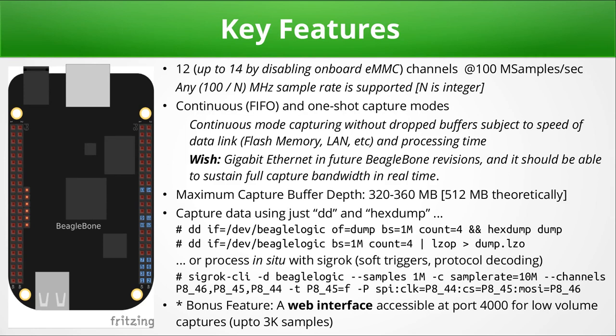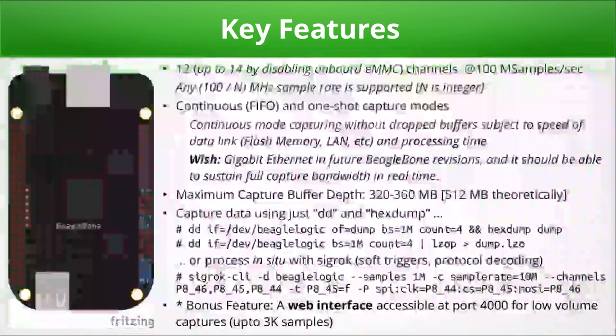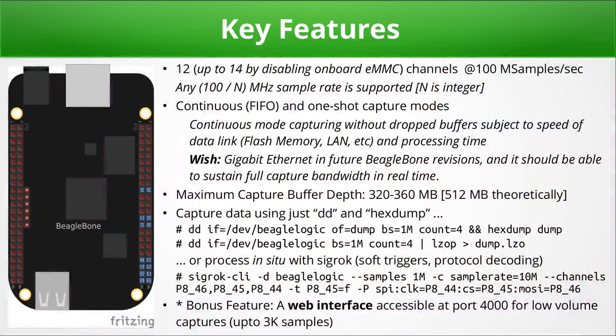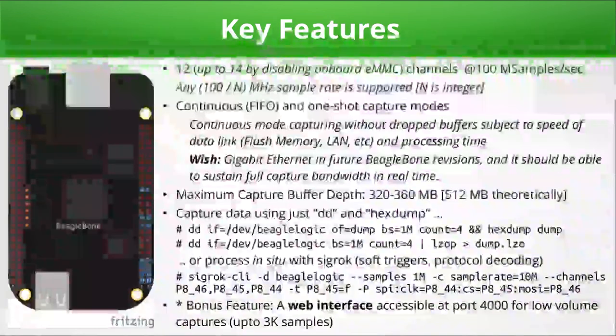Since the BeagleBone is a full-featured Linux computer, BeagleLogic can not only capture raw logic data but can also process it using libraries via SigRok to obtain decoded logic protocols like I2C, I2S, SPI, etc. Here you can see an example command line which executes on the BeagleBone itself and uses the BeagleLogic trial, which has been integrated with the SigRok library to capture and decode SPI waveforms.